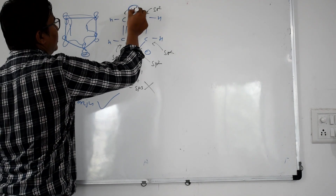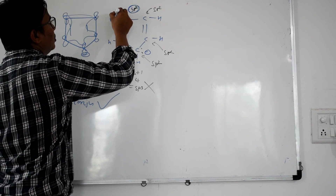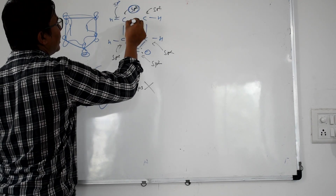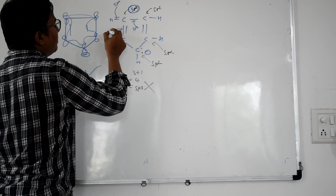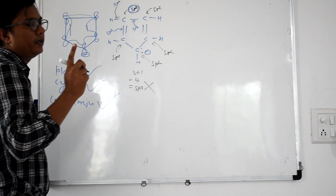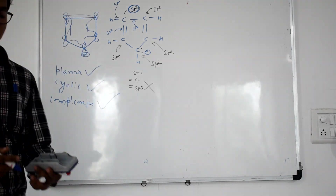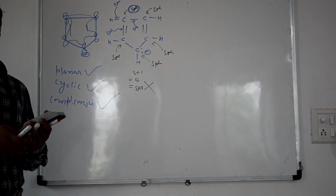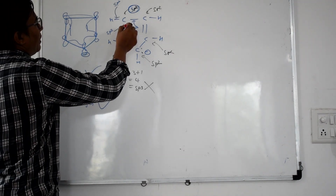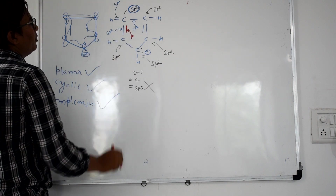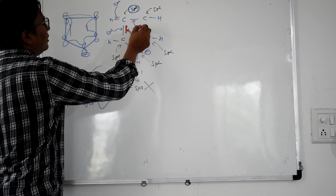There are three sp2 hybrid orbitals, and pi bonds are made by p orbitals — not hybrid orbitals. For a carbon atom that is sp2 hybridized, there are three sp2 hybrid orbitals and one unhybridized p orbital. The sigma bonds are made by the sp2 hybrid orbitals, and the pi bond is made by the p orbital. So the electrons in those p orbitals are the pi electrons.